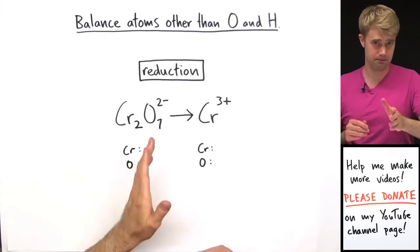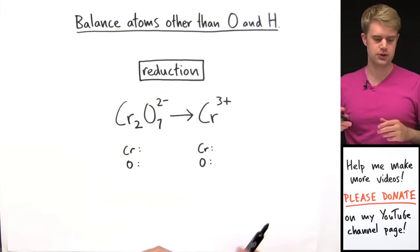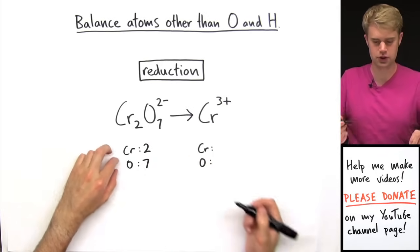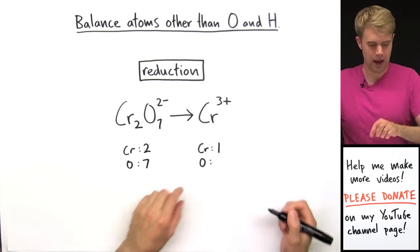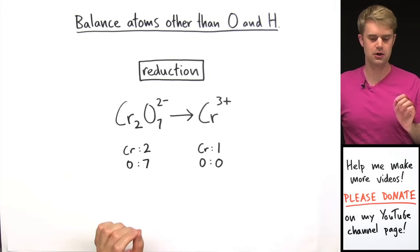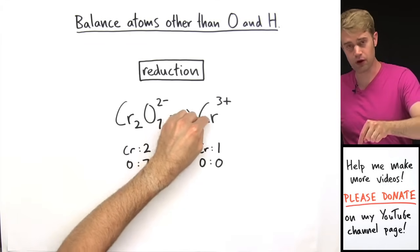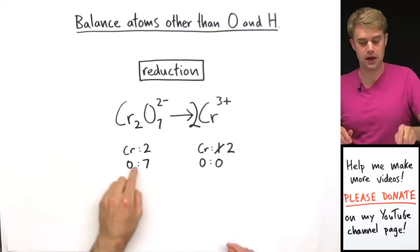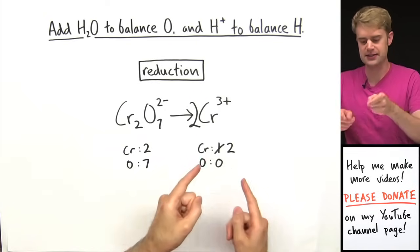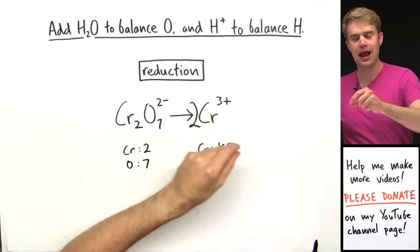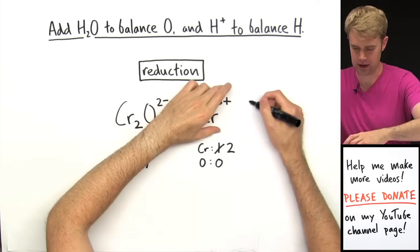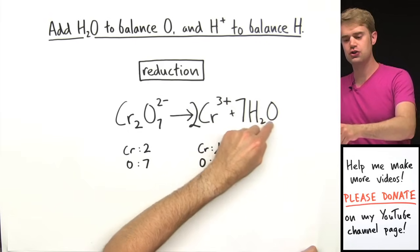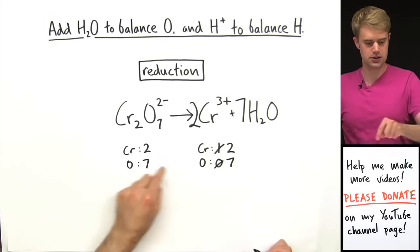We're going to start by balancing atoms other than O and H. We have two chromiums on this side and seven oxygens, but over on this side we only have one chromium and no oxygens. So first I'm going to put a 2 in front of the Cr here — now instead of having one Cr I have 2, and the chromiums balance. Now let's move on to the oxygens. I've got seven oxygens here and zero here. In order to balance these oxygens I'm going to add H2O — each H2O molecule has one oxygen atom — so I'm going to add seven H2O to this side. That gives me seven oxygens. Now these balance.